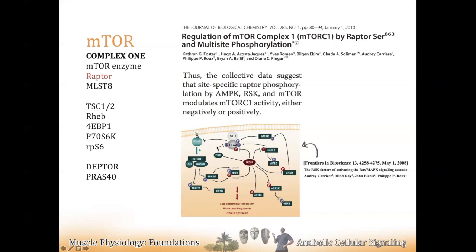RSK is phosphorylating tuberin to shut it off, phosphorylating glycogen synthase kinase 3 — which turns on tuberin — to shut that off too, and inhibiting LKB1, which would be turning on AMPK. Shutting off LKB1 means less AMPK activation. So there are a lot of arrows and words all at once, but this will start clicking soon.